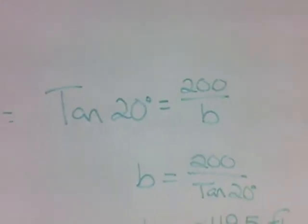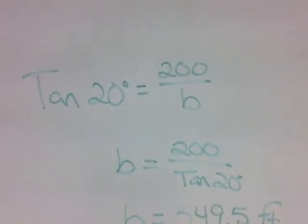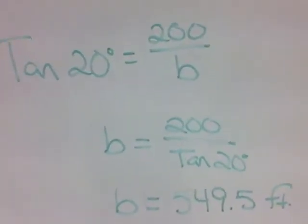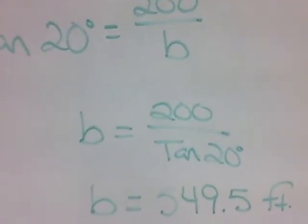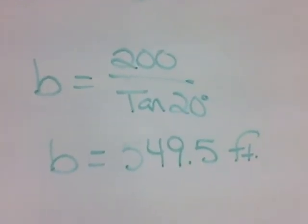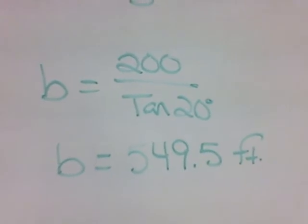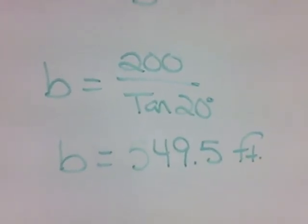Just solve for B. B equals 200 divided by tangent of 20, and then solve that out, and rounding off to the nearest tenth, we find that our shadow is 549.5 feet.